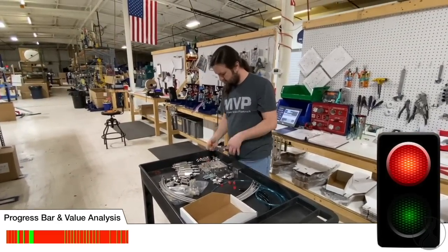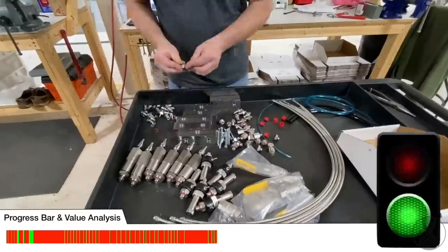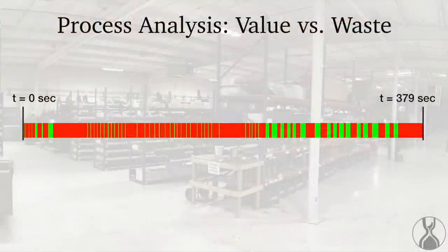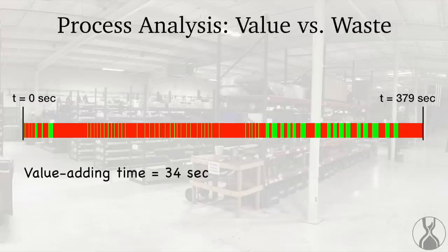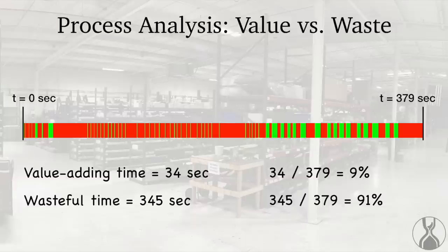Now let's speed up this video and get to the end so we can perform some basic analysis of what's going on. When we analyze this entire video clip of 379 seconds, you see a lot more red than green. When you count up the value-adding time — the green bars — it only amounts to 34 seconds. And when you count up the red time, the wasteful time, there's 345 seconds. Do a little math and you'll see that only 9% is value-adding time, compared to 91% of the time that involves wasteful activity.